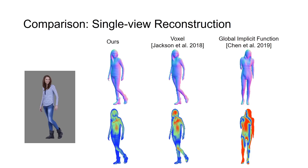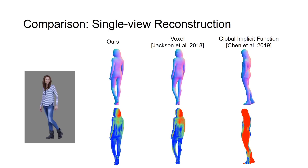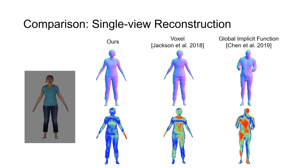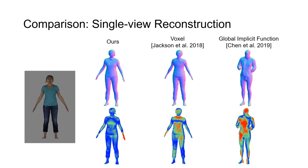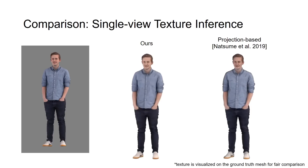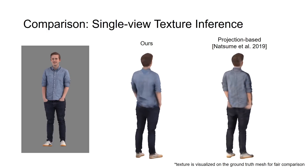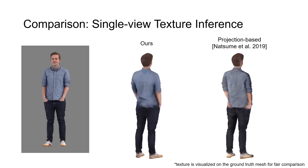Here we show a comparison with previous methods for the task of single-view reconstruction. We compare with the voxel-based regression method and an implicit function that uses the global image feature. All approaches are trained using the same data. While the voxel-based regression method suffers from limited resolution due to the high-memory footprint of voxels, we recover the surface geometry at higher precision. The method using the global image feature fails to reconstruct details such as pose and clothing present in the image. We also compare our texture inference on the surface mesh with a recently proposed projection-based approach, which synthesizes the image from the other view and stitches it onto the surface. While previous methods suffer from artifacts by projection, our approach successfully infers the missing texture because we directly predict color on the surface.